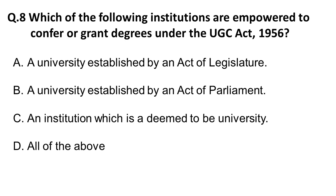Next question: which of the following institutions are empowered to confer or grant degrees under the UGC Act of 1956? Options are: universities established by an act of legislature, universities established by an act of parliament (central universities), and institutions deemed to be universities. The correct answer is all of the above, because all state universities, central universities, and deemed universities are empowered to confer degrees to students.